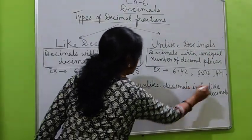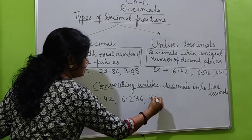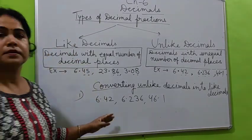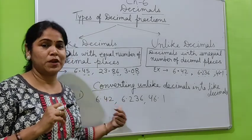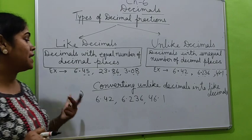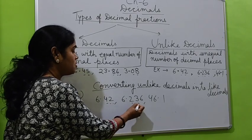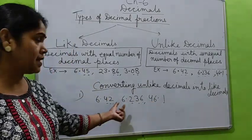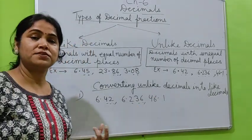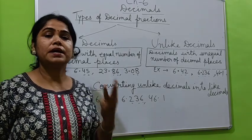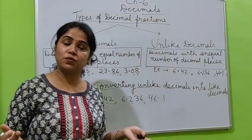For that what do we do? I am giving you a question, same whatever I have given in the example. If I have to write these decimals in like decimals, only one thing you have to do: you have to check the decimal places, how many digits are there. Here two digits are there, here three digits are there, here one digit is there. So for this we have to change all the decimal places into equal number of places. In each number we have to keep equal number of decimal places.